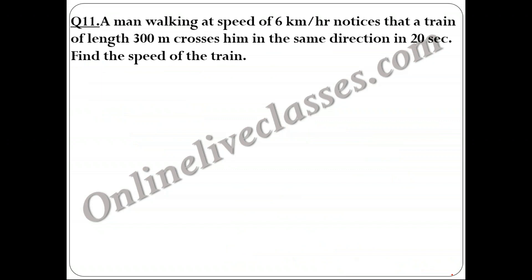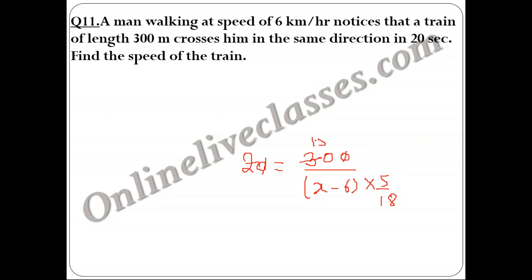Question 11: A man walking at 6 km/hr notices that a train of length 300 meters crosses him in the same direction in 20 seconds. Using Case 4: 20 = 300 / [(x − 6) × 5/18], where x is the train speed. Solving: (x − 6) × 5/18 = 15, so (x − 6) = 54, giving x = 60 km/hr. The train's speed is 60 km/hr.